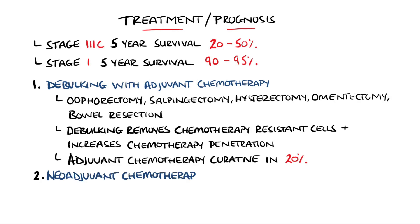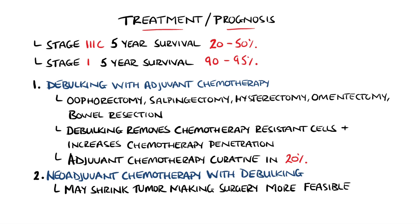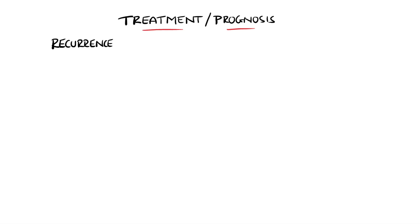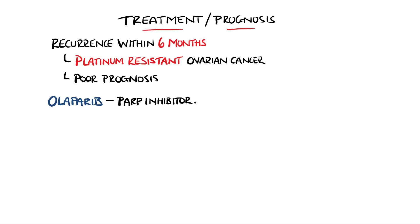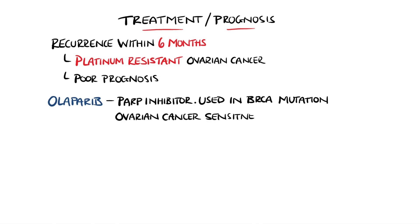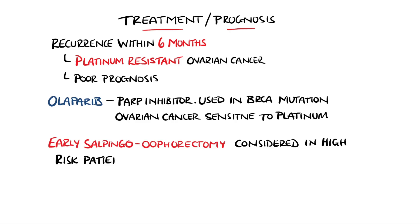In some cases, chemotherapy may be done prior to surgery in order to shrink tumours and make debulking easier. Platins, which are a platinum-based chemotherapy, are the most common type used, and if patients have a recurrence of ovarian cancer within 6 months, it is defined as platinum-resistant ovarian cancer, which is associated with a poor prognosis. Olaparib is an inhibitor of poly-ADP-ribose polymerase enzymes, known as a PARP inhibitor, used in patients with BRCA gene mutations and platinum-sensitive ovarian cancers. High-risk patients are considered for early salpingo-oophorectomy in order to reduce the risk of developing ovarian cancer.